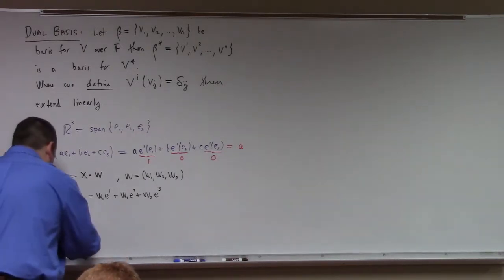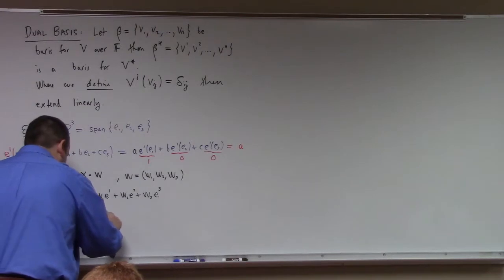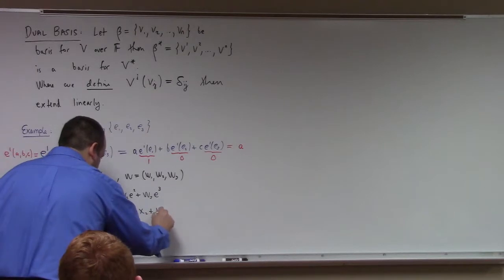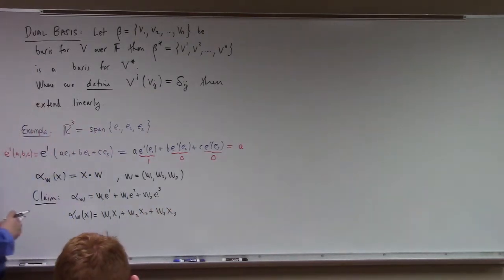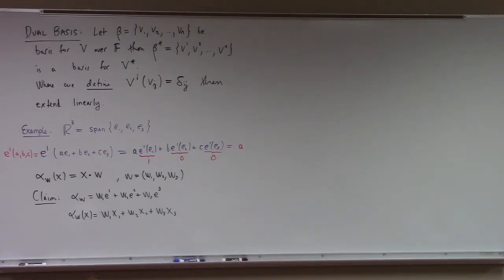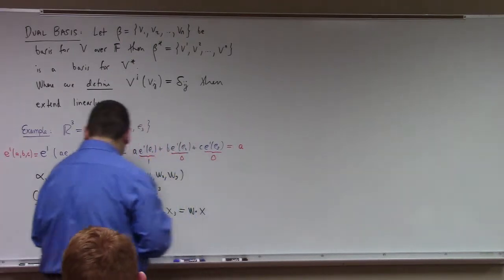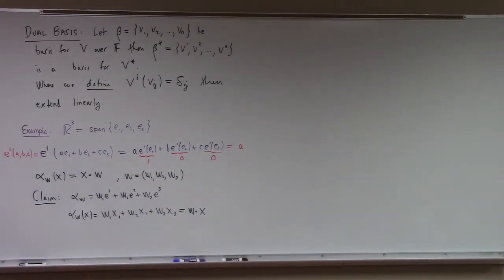If you calculate alpha sub w acting on x, you get w₁x₁ + w₂x₂ + w₃x₃ by a calculation similar to the one above. Because when e^1 hits x, it just picks off x₁. When e^2 hits x, it picks off x₂. When e^3 hits x, it picks off x₃. And of course that's the dot product of w and x, which is the definition of alpha sub w. So alpha sub w is indeed w₁·e^1 + w₂·e^2 + w₃·e^3.